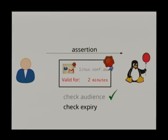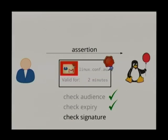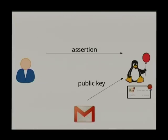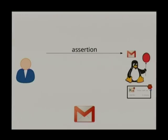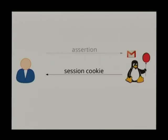The second field is the expiry. By default, assertions are valid for two minutes — just enough time to log you in, after which the assertion becomes useless. Finally, we need to check the signature on the certificate. This is simple public-private key cryptography: to check the certificate signed by the email provider, we go to the email provider, grab the public key, and verify the certificate. Note that grabbing the public key is a domain-wide key — not specific to the user — so you're not revealing anything. And if it's Gmail, you probably already have a cached copy because more than one user on the LCA website likely has a Gmail address. Once verified, everything is valid and you can log the user in. Persona replaces the password check, but all the rest — session management, cookies — stays the same.